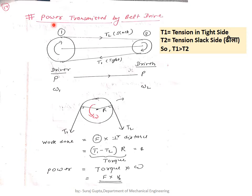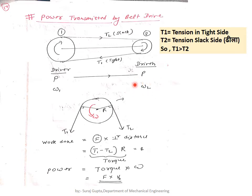So, what is the power transmitted by the belt drive? We have established that one side is the slack side and the other is the tight side — one pulley is driven and the other is the driver. The tight side belongs to the driver, and power is transmitted to the driven pulley. The driver has angular speed ω₁ and the driven has angular speed ω₂.